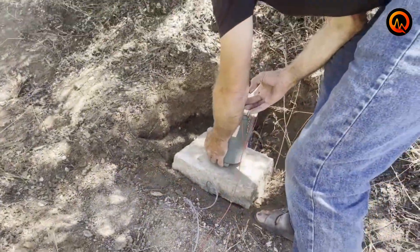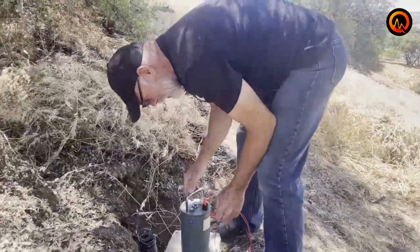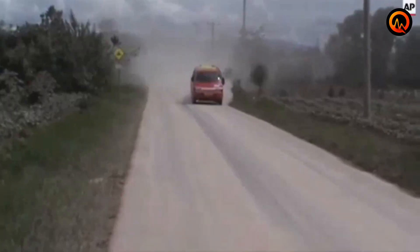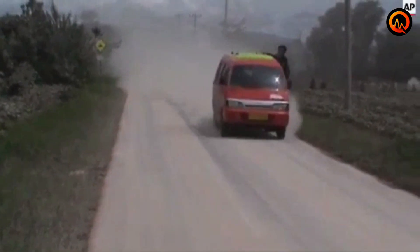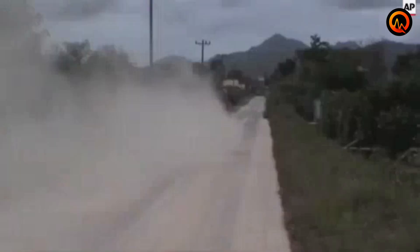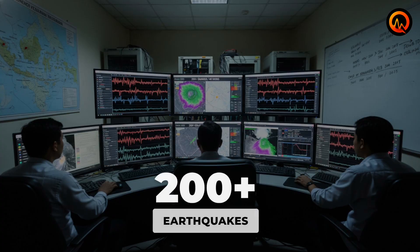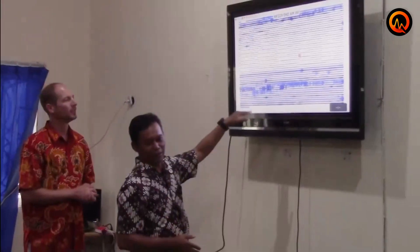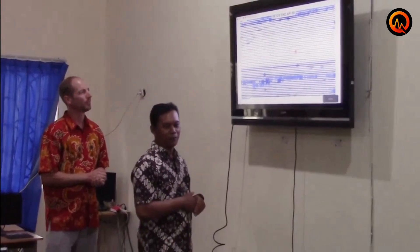Within days, Indonesia's Mount Siamaru began showing increased seismic activity, followed by explosive eruptions that forced evacuations across multiple villages. The Indonesian Center for Volcanology recorded over 200 volcanic earthquakes in a 48-hour period, a pattern typically seen only during major eruptive phases.